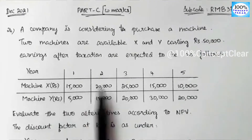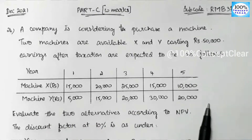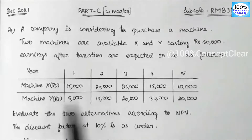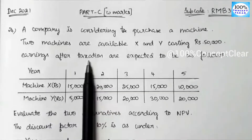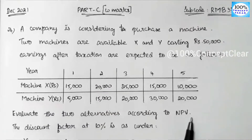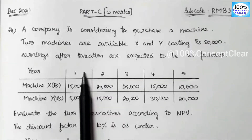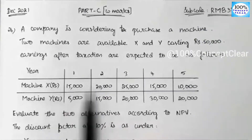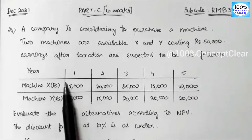Machine X has cash inflows and machine Y has cash inflows. We note that cash flows are earnings after taxation. We have net present value calculated using cash flow after tax and before depreciation. We will calculate that amount.